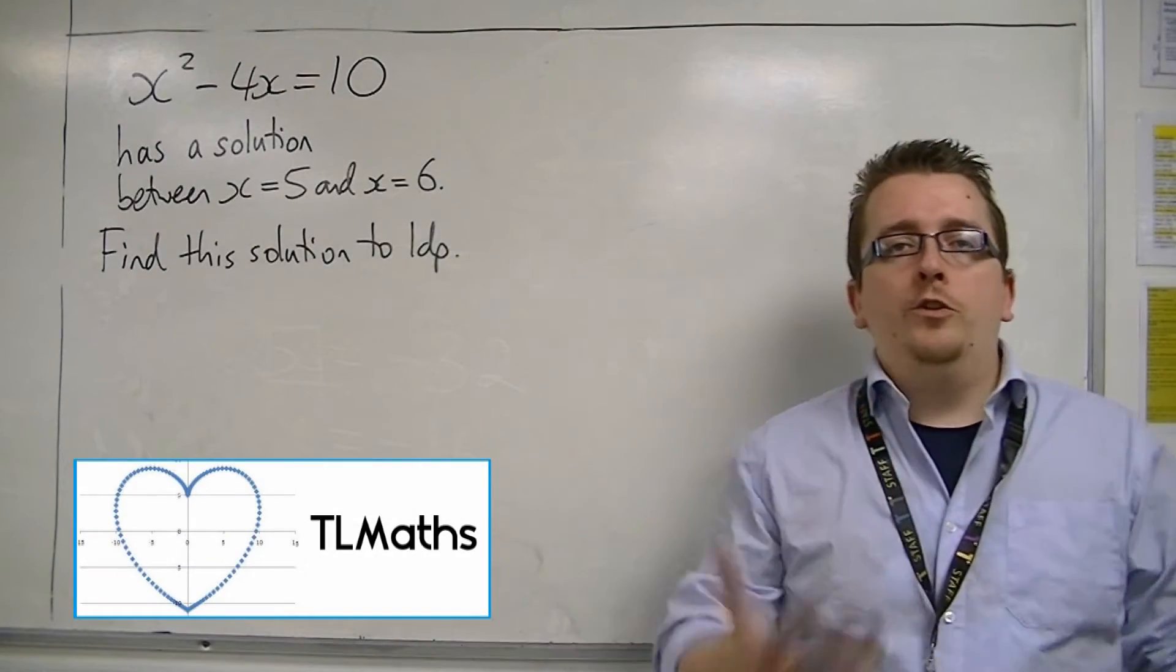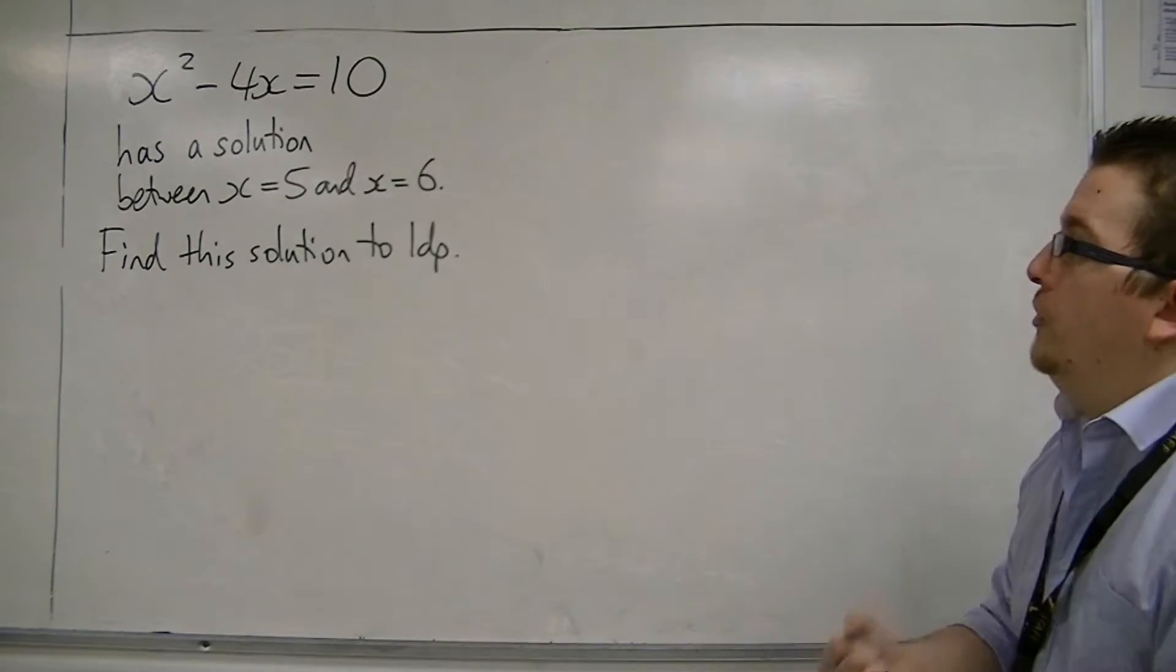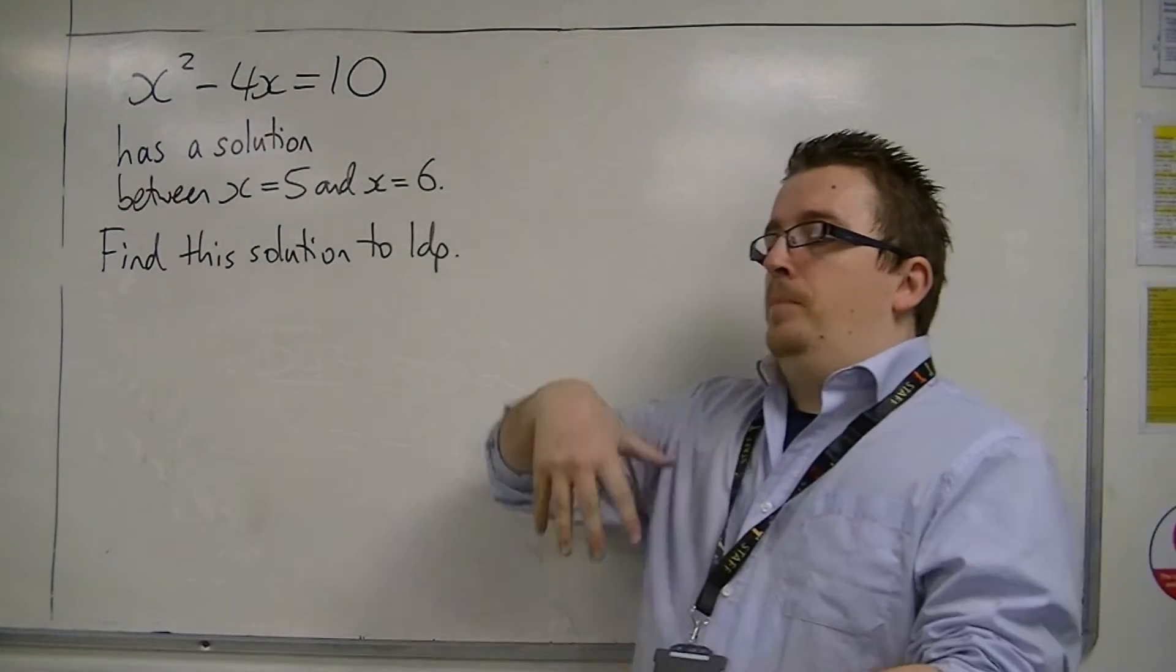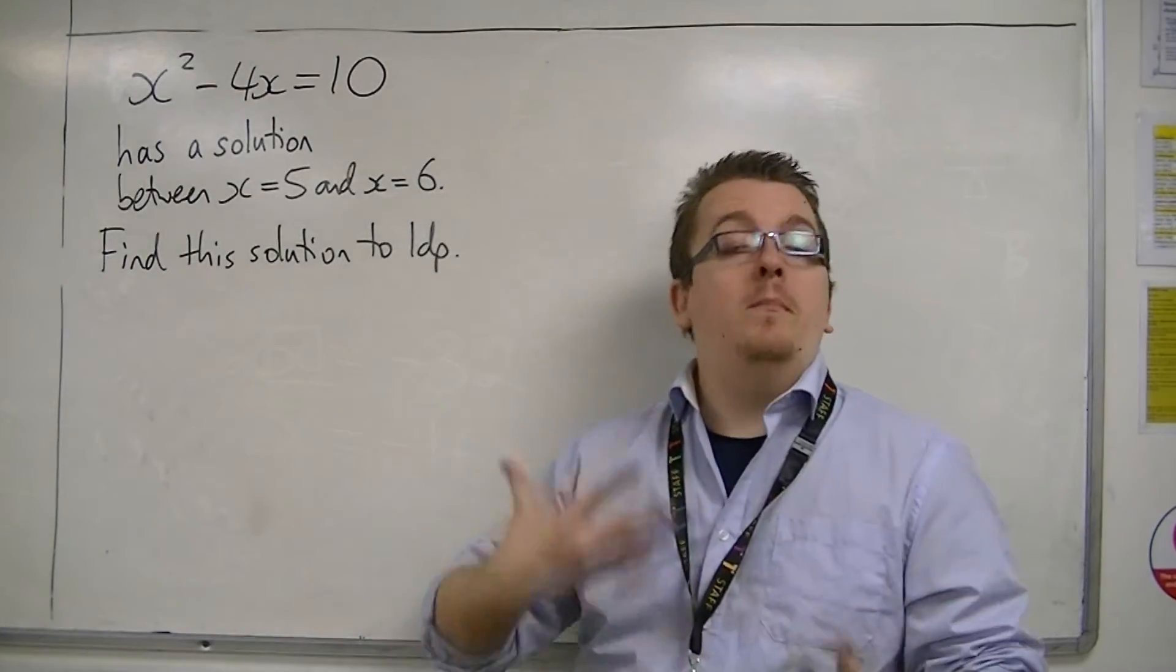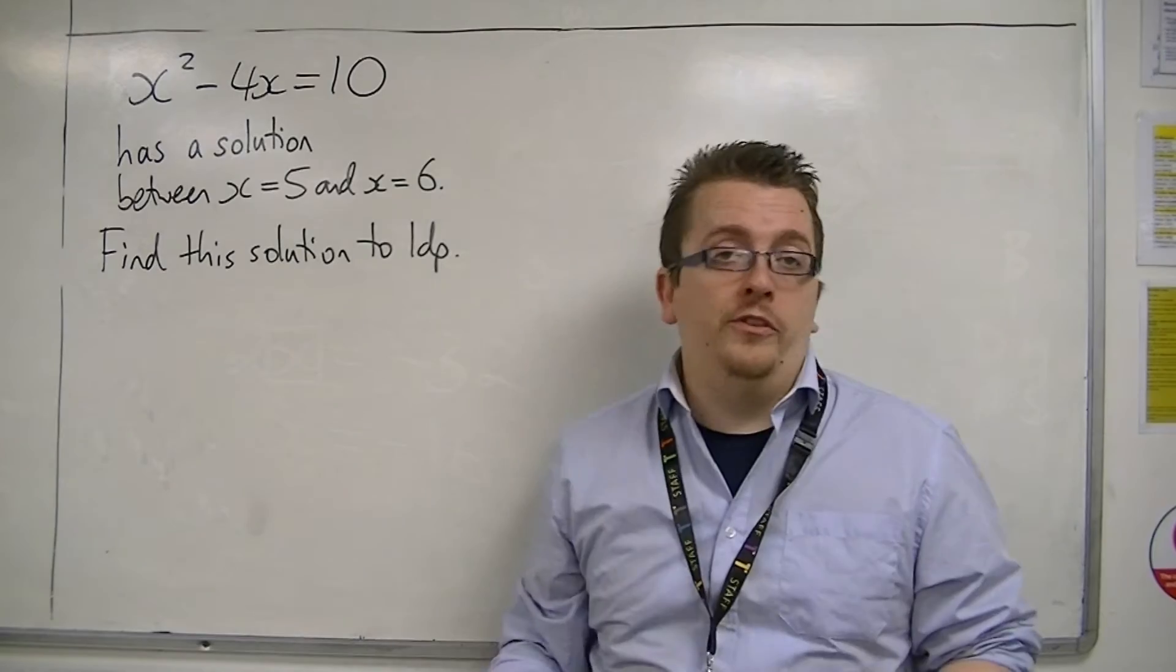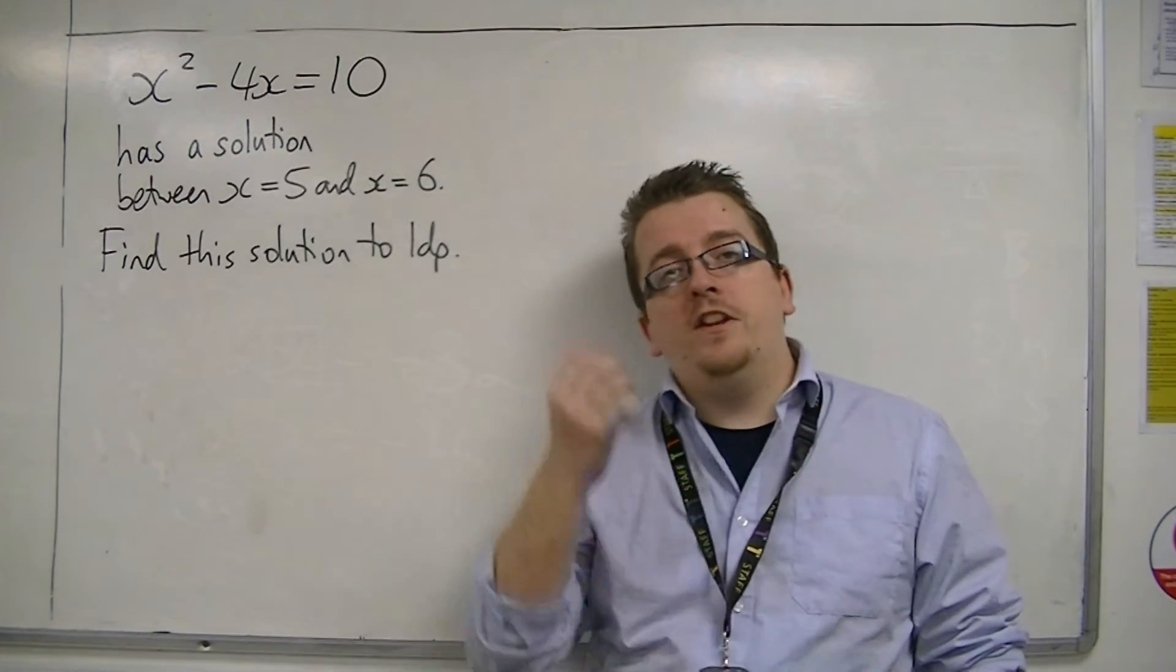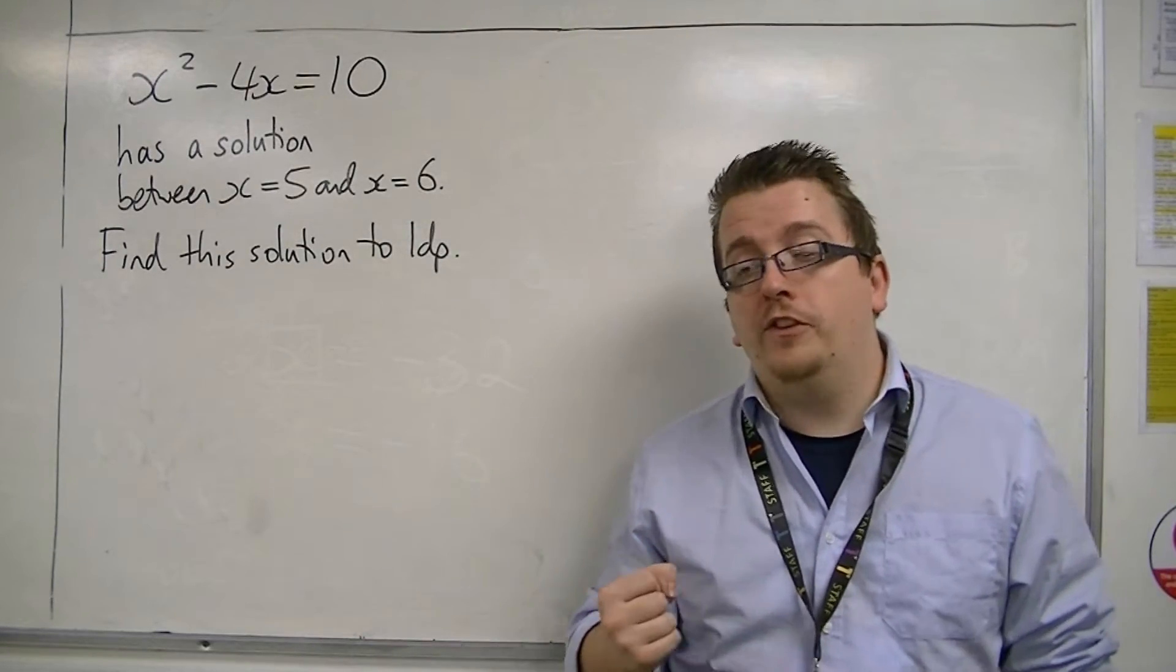On some papers, you can get a trial and improvement question. The trial and improvement question sets you up with an equation to solve which we don't yet know how to solve. We don't have the mathematics in order to be able to do that. So all we can do is try and find an approximate answer, and we're going to use a trial and improvement method to do it.